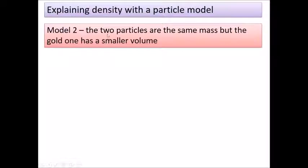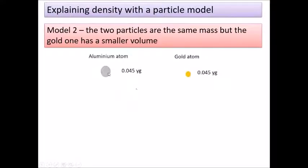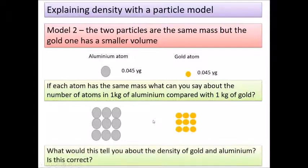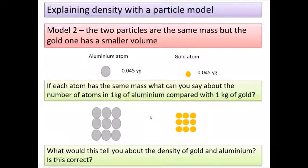Let's try another model where the particles have the same mass but the gold ones have a smaller volume. With the same mass per atom, gold would need fewer particles to fill the same volume, meaning the density of aluminium would be less than the density of gold. This model seems to give us the right answer in terms of density.